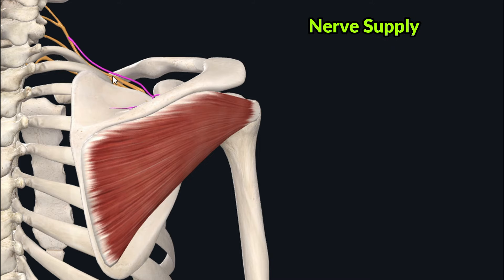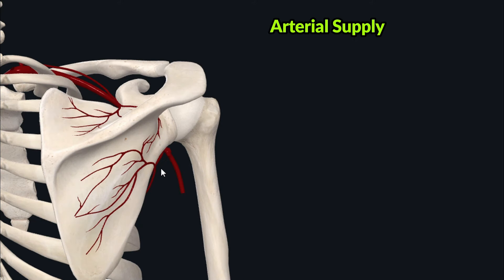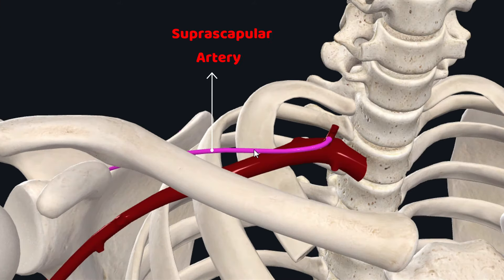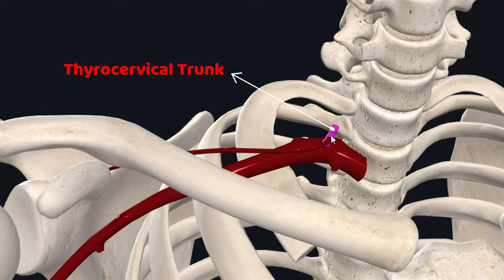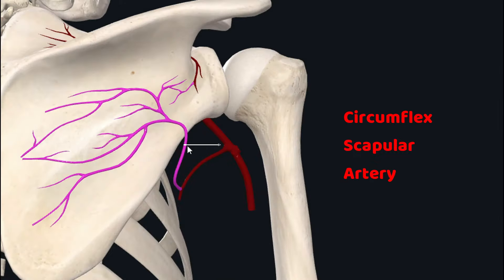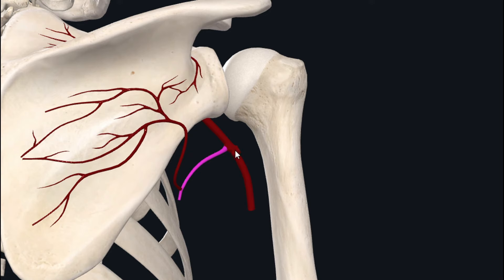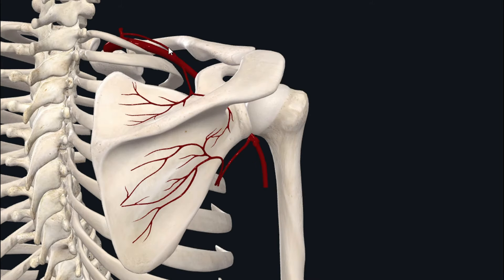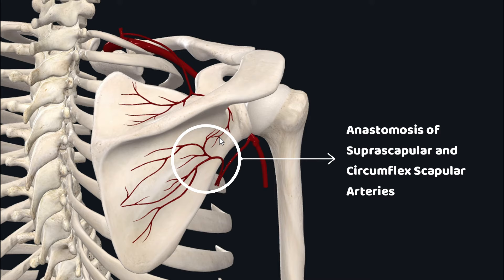The infraspinatus is supplied by the suprascapular nerve. Its arterial supply comes from the suprascapular artery and the circumflex scapular artery. The suprascapular artery arises from the thyrocervical trunk, which arises from the subclavian artery. The circumflex scapular artery arises from the subscapular artery, which arises from the third part of the axillary artery. These two arteries anastomose at the infraspinous fossa.